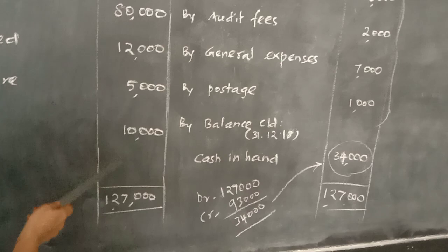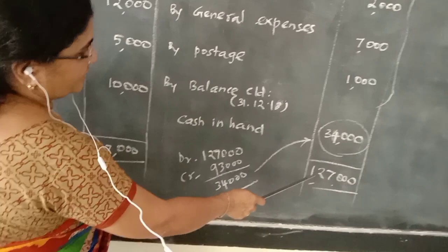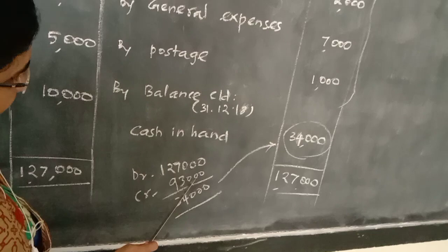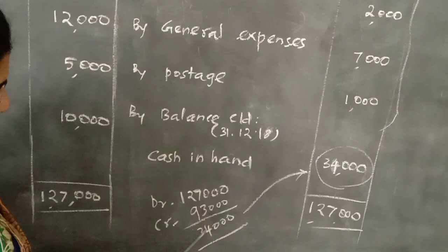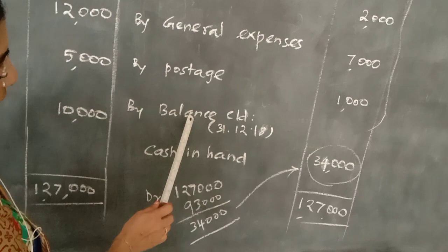Receipt entry. Now, receipt side total is 1,27,000. This is the balance. Credit side, you have to enter 1,27,000. Debit balance 1,27,000. Credit side 93,000. Receipt total is 1,27,000. Cash in hand 34,000.